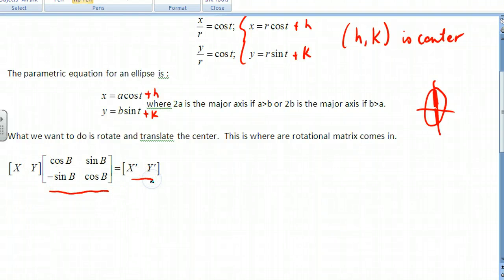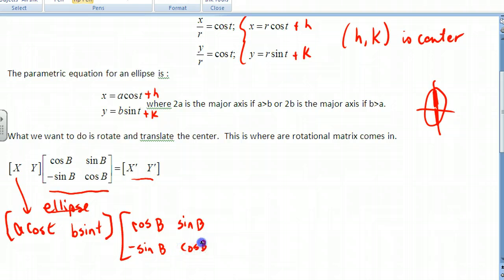So if I start off with an ellipse, and with the ellipse I'm going to have the a cosine t. That would be my x value. And then I'm also going to have my y value, which would be b sine of t. So that's equivalent to my x and y. And what I want to do is I want to try to rotate a certain angle measurement. So this would be cosine B, sine of B, and then negative sine of B, cosine B.